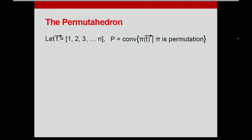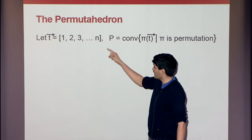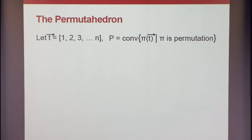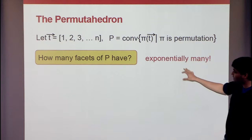Let me start off with introducing extended formulations by an example, because I think an example really helps crystallize why this definition is the way it is and why it's interesting. So let me start with a nice example called the permutahedron, which is a polytope in n dimensions. You take a fixed vector t with integer entries, one, two, three, all the way up to n, and take all possible permutations of this vector and their convex hull. This gives a simple polytope in n dimensions, but when measured by how many facets it has, it's actually very complex because it has exponentially many facets.